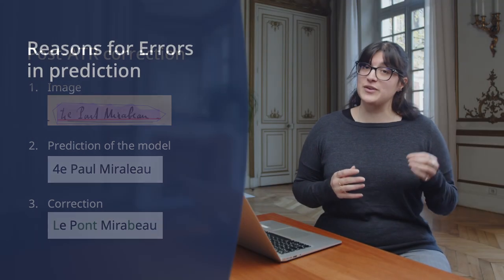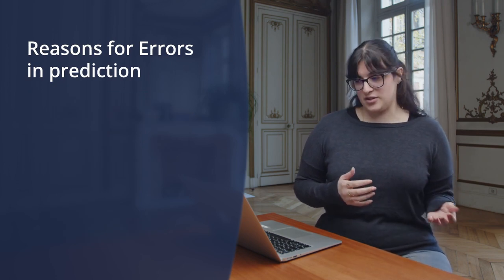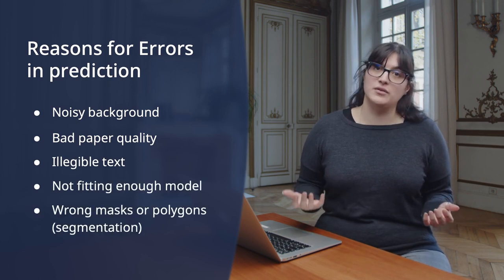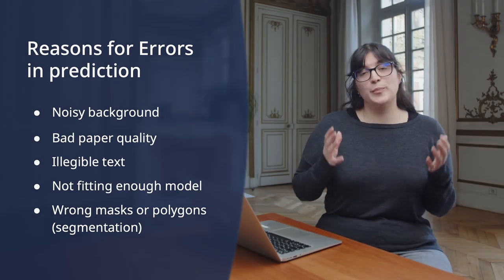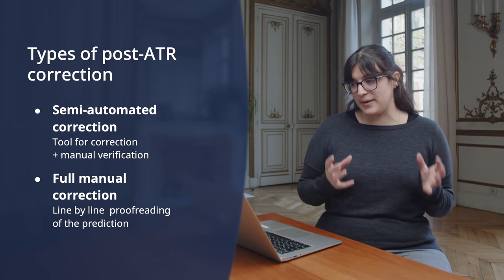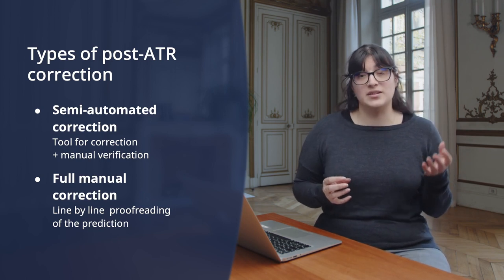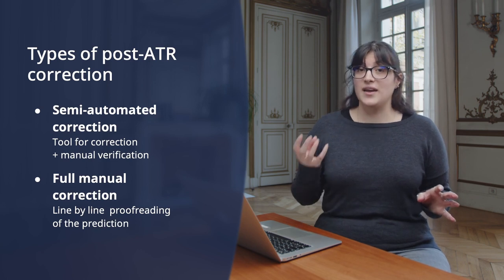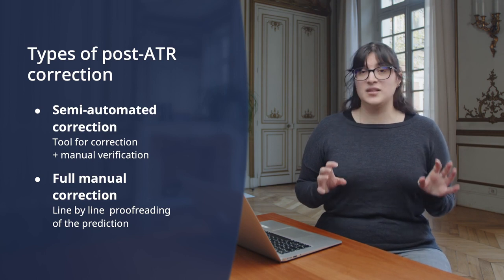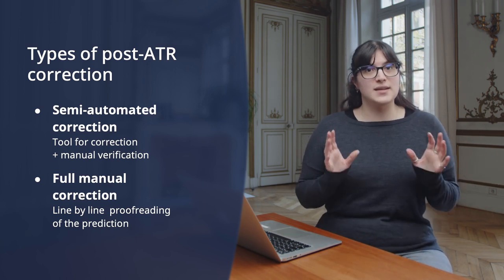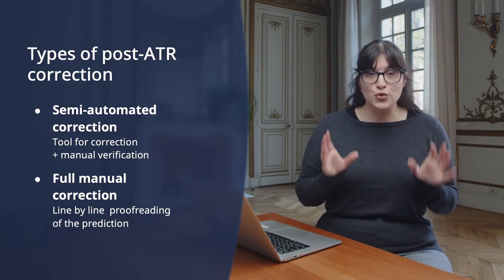Errors in prediction can be the result of many factors related to the scanned image, the model, or segmentation — such as noisy background, bad image quality, illegibility of text, an unfit model, or wrong masks and polygons in the segmentation. There are two possible ways to do post-ATR correction: semi-automated correction and full manual correction. Choosing one or the other will depend on the amount of errors in the prediction. Semi-automated correction can be time-saving when errors occur every few lines, but will be a waste of time if there are only occasional errors. Moreover, techniques and tools for semi-automated correction vary, and its utility depends on the user's affinity with digital tools. Therefore, we advise using semi-automated correction only if you estimate there will be a truly significant opportunity to save time. If you choose it, we suggest two tools in our video description.